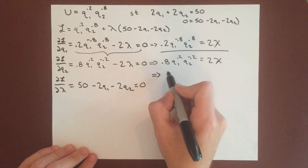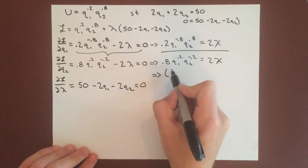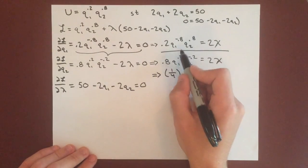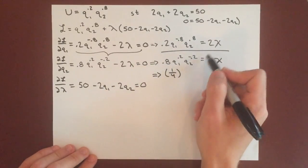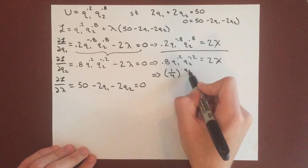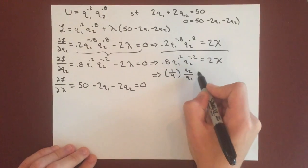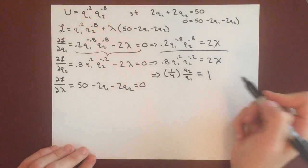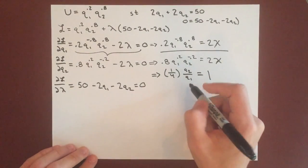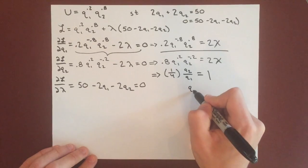We'll write the new equation over here. 0.2 divided by 0.8 is going to be 1 fourth, and then we'll have a q2 on top and a q1 on the bottom. And 2 over 2 is 1. So we can get this relationship for q1 and q2, and we'll just solve for q2 here, and we'll get it equals 4q1.